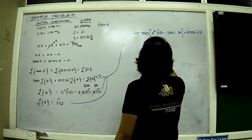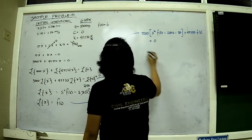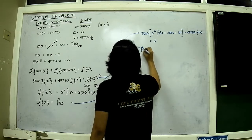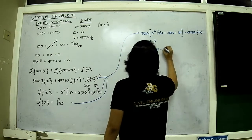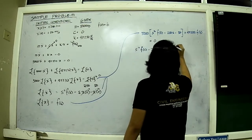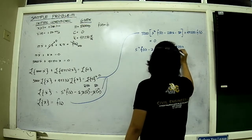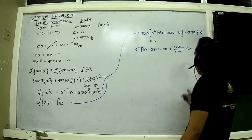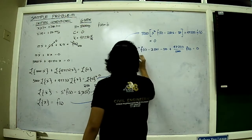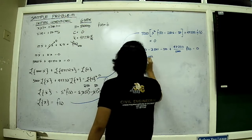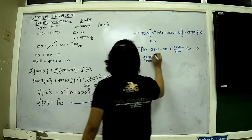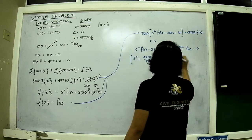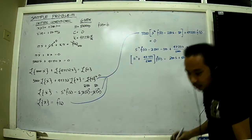Now I divide everything by 5000, so this becomes: s²F(s) minus 250s minus 50, plus 47232 divided by 5000, times F(s). Transposing the initial condition terms to the right-hand side, we have 250s plus 50.